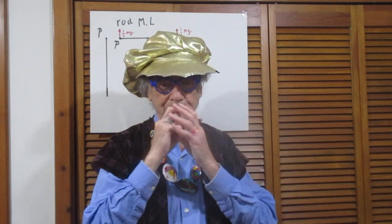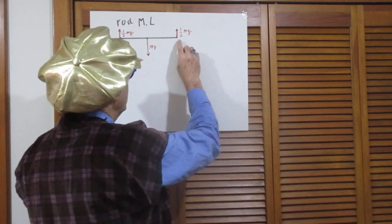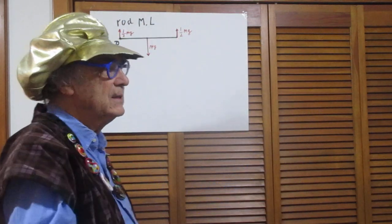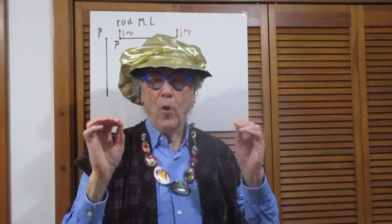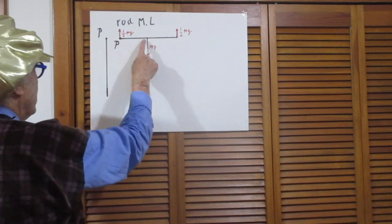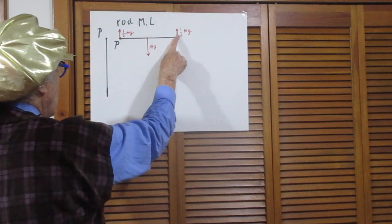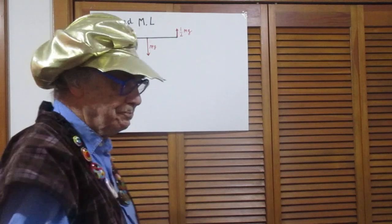Net force zero, torque relative to any point is zero. Now comes the question: I remove my hand — just like that. I would like to know what the force at point P on the rod is instantaneously. So I take my finger off: gravity is still mg of course, my hand force becomes zero — so what will this force at P be?